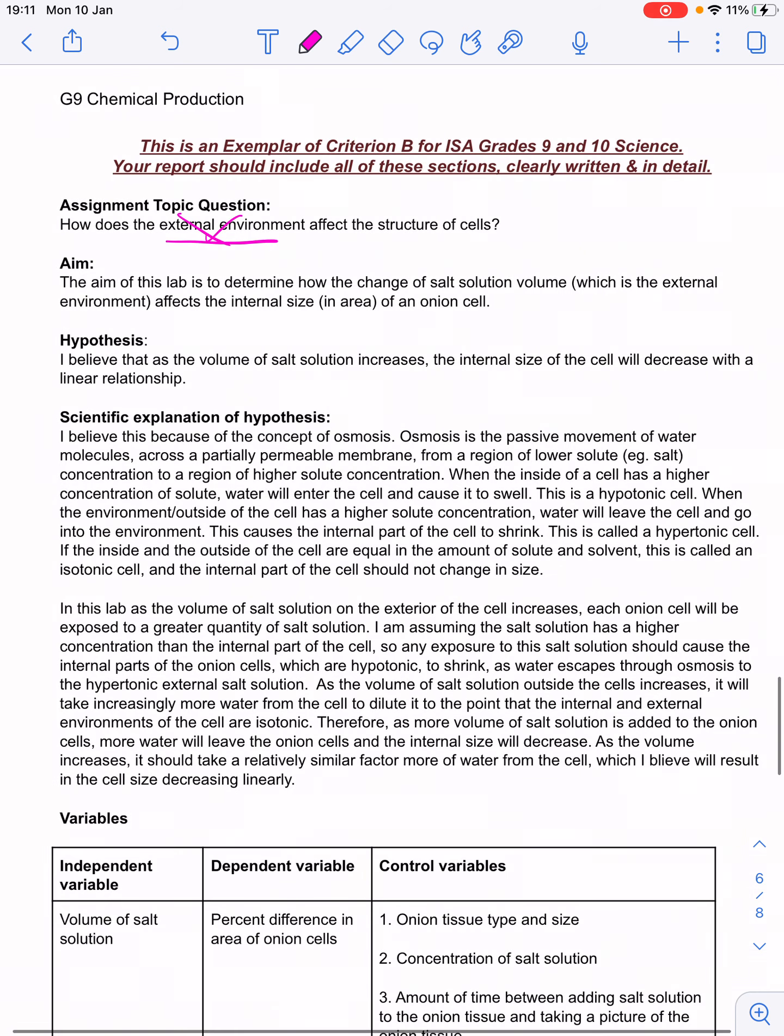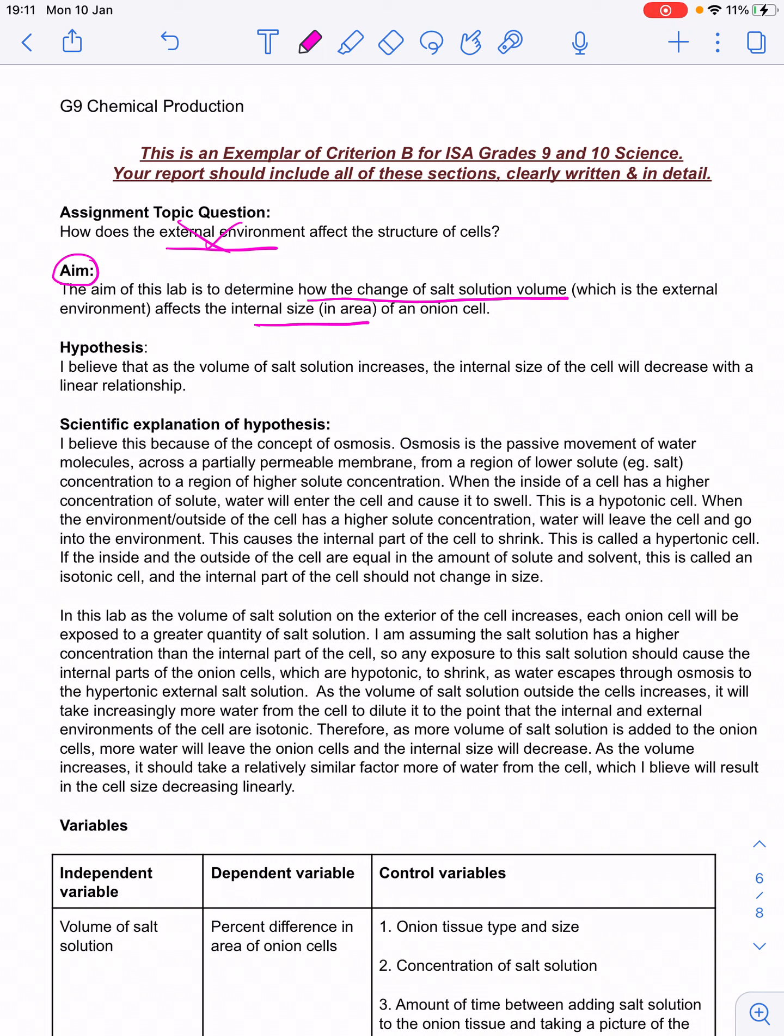If you look down at what the aim is, it says the aim is to determine how the change of the salt solution volume affects the internal size and area of the onion cell. So, this is really a biology lab, it's about the sizes of cells, but the aim is much better at expressing what this lab is about than the topic question.